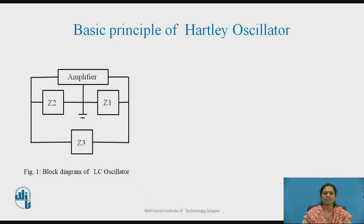Z1, Z2, and Z3 are inductors and capacitors that form the tank circuit. For the Colpitts oscillator, which we observed in the previous lecture, Z1 and Z2 were capacitors and Z3 was an inductor. Now, in the Hartley oscillator, Z1 and Z2 are inductors and Z3 is a capacitor.